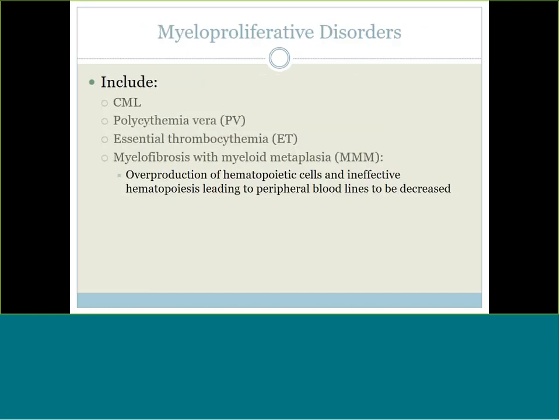The four myeloproliferative disorders we are going to learn are CML, polycythemia vera, essential thrombocythemia, and myelofibrosis. We will learn what is being overly produced in each one to make it a myeloproliferative disease.